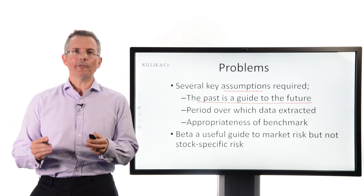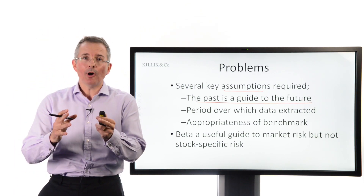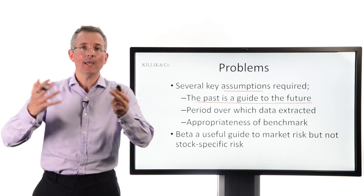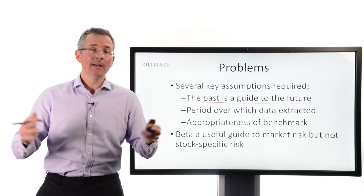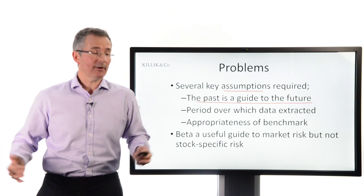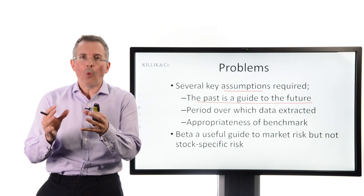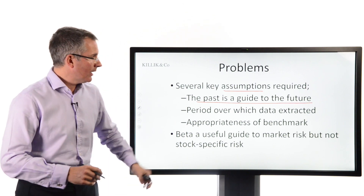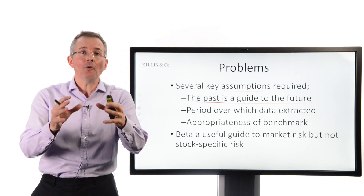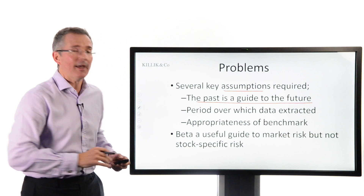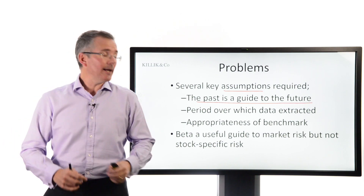There is also the question of the appropriateness of the benchmark. There is a way of testing — using something called R-squared — whether the benchmark chosen is sensible for the stock you're looking at. If I'm publishing a beta, the benchmark is ultimately my choice. Finally, beta is really only telling you what a stock does in relation to the market — it's not telling you much about the risk of that specific stock. For stock-specific risk, you need to go elsewhere.